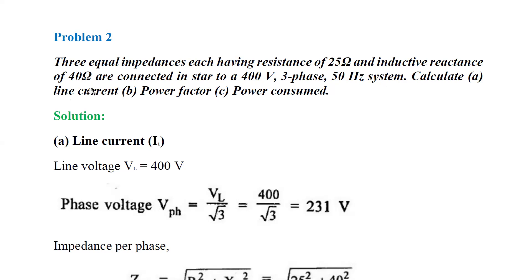They ask us to calculate: first, line current; second, power factor; and third, power consumption. Reading the question clearly, three equal impedances having resistance 25 ohms and inductive reactance 40 ohms are connected in star connection, connected to a 400 volt three phase system. The line voltage VL is clearly given as 400 volts. Sometimes phase voltage may be given separately, so you should be very clear while taking this value.